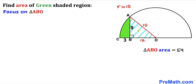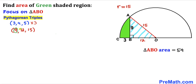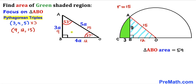Focusing again on triangle ABO, recall the Pythagorean triplet 3, 4, 5. Multiplying all values by 3 gives 9, 12, and 15 — exactly our side lengths. In such a right triangle, the smallest angle is opposite the smallest side, which here is 37 degrees, and the other acute angle is 53 degrees.